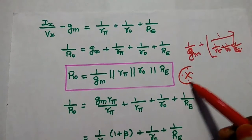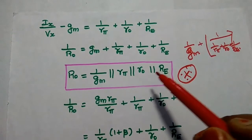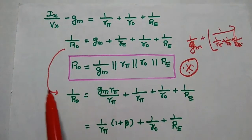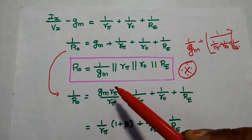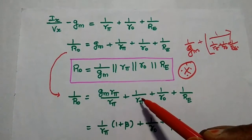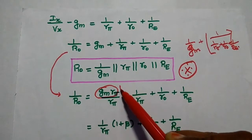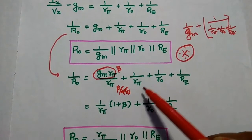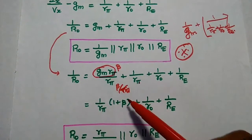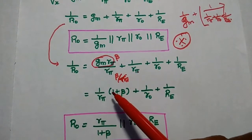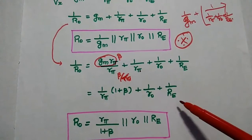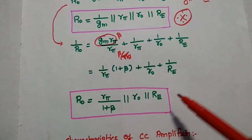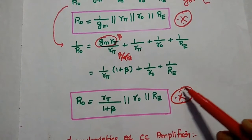The output resistance is the parallel combination of Rpi, Ro, Re, and 1/Gm. For further simplification, multiplying numerator and denominator by Rpi, Gm·Rpi equals Beta. So the output resistance can also be written as Rpi/(1 + Beta) in parallel with Ro in parallel with Re. This is another expression for the output resistance.